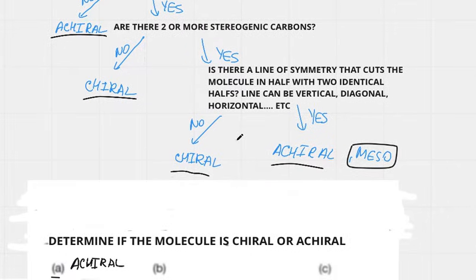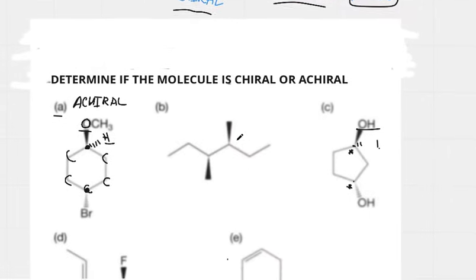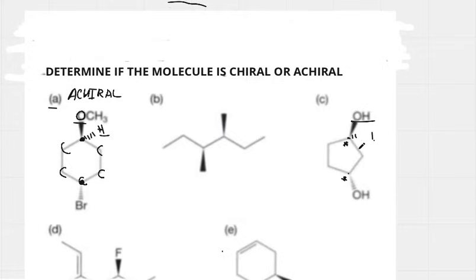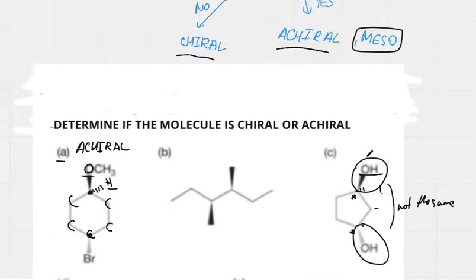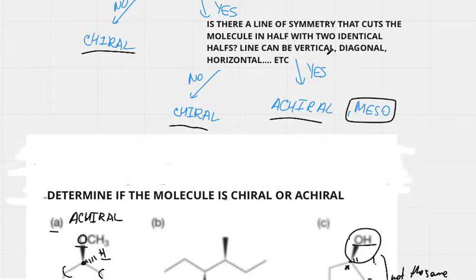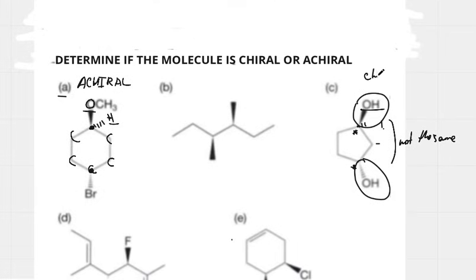Now we ask: is there a line of symmetry that cuts the molecule into two identical halves? You might think there is a line of symmetry through the middle, however the configuration on one side is dashed and on the other is wedge. Because one is wedge and the other is dashed, those two groups are not identical, so this is not a line of symmetry. With no line of symmetry, the molecule is chiral — therefore molecule C is chiral.